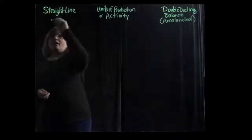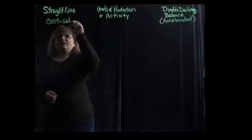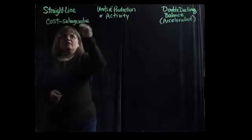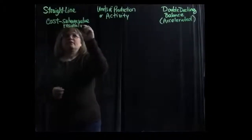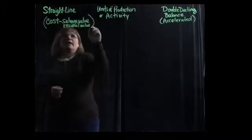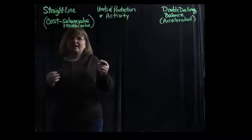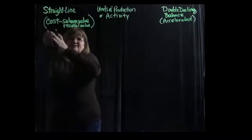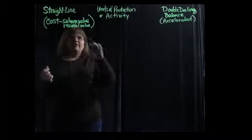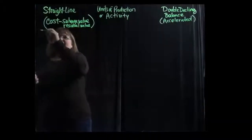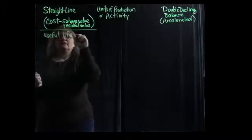For the straight line method, our formula for calculating the depreciation is our acquisition cost minus our salvage value. The salvage value is also sometimes called the residual value, and it indicates the amount that we expect to be able to sell the asset for once we're done using it for our company's intended purpose. For example, if we were going to buy a delivery truck for $60,000 today and use it for five years, and we think at the end of five years we can sell that truck for $10,000, that would be our salvage or residual value. We divide that cost minus the salvage value by the useful life measured as time.